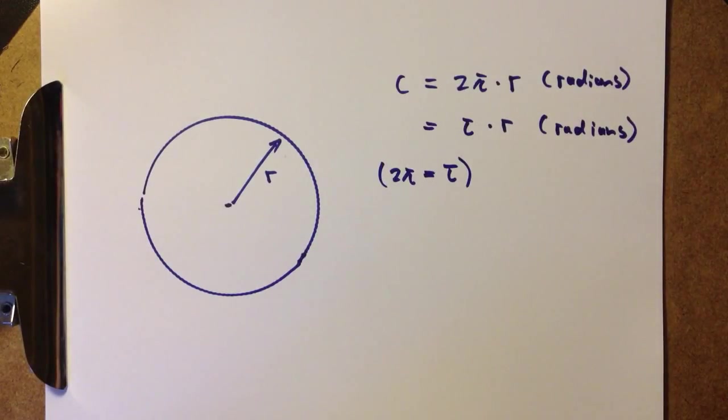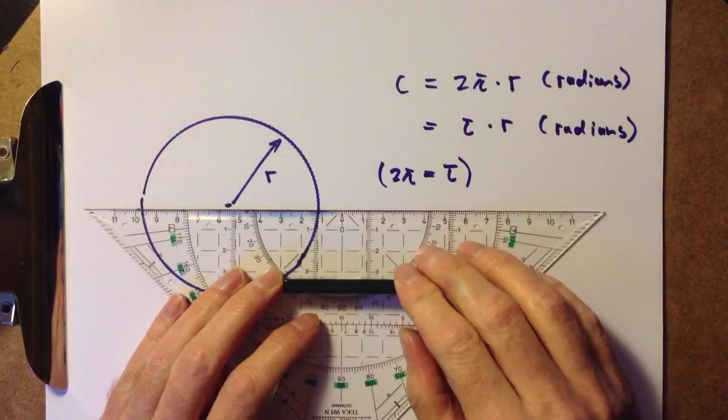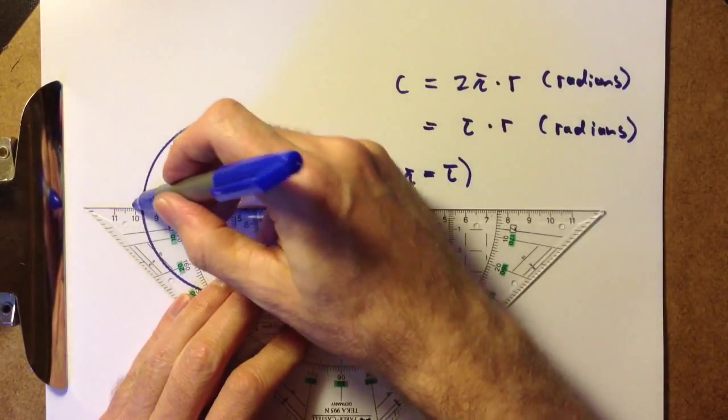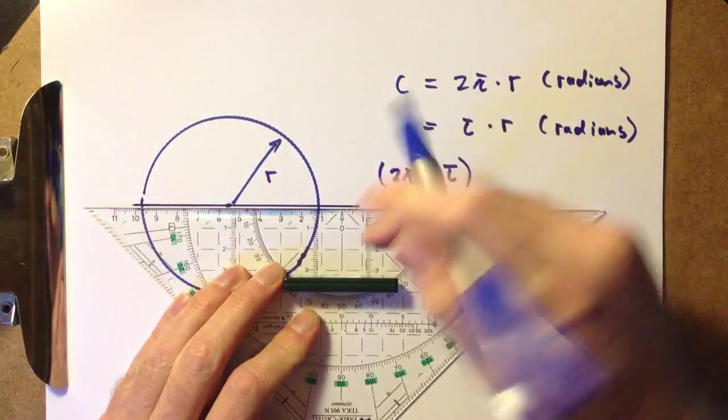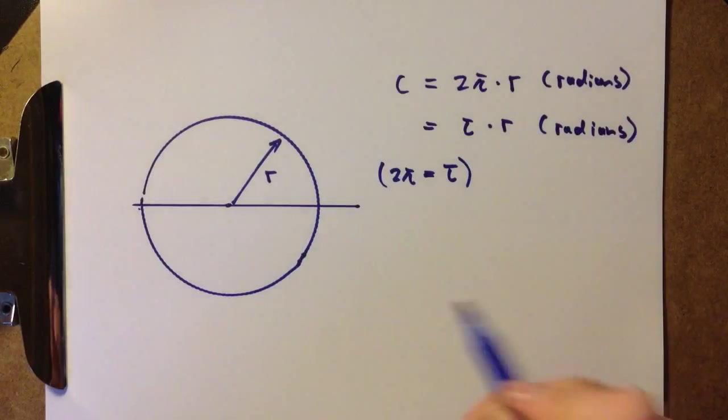Conventionally, we can also use a variety of degree scales. The most common one is the one that divides a circle into 360 degrees.